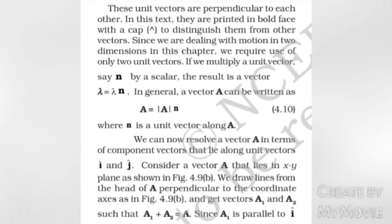These unit vectors are perpendicular to each other. In this text, they are printed in boldface with a cap to distinguish them from other vectors. Since we are dealing with motion in two dimensions in this chapter, we require only two unit vectors. If we multiply a unit vector, say n̂, by a scalar λ, the result is a vector λ = λ n̂. In general, a vector A can be written as vector A equals |A| n̂, where n̂ is a unit vector along vector A. We can now resolve vector A in terms of component vectors that lie along unit vectors î and ĵ.